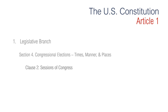Section 4, Clause 2 is regarding sessions of Congress. It says that Congress has to meet every year at least once. The regular session now begins at noon on January 3rd of each year, subsequent to the 20th Amendment, unless Congress passes a law to fix a different date. Congress stays in session until its members vote to adjourn. Additionally, the president may call a special session.